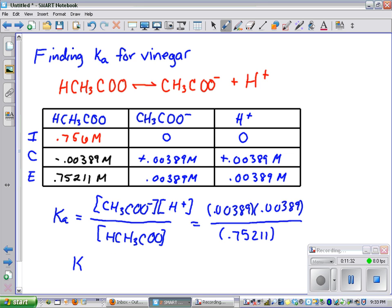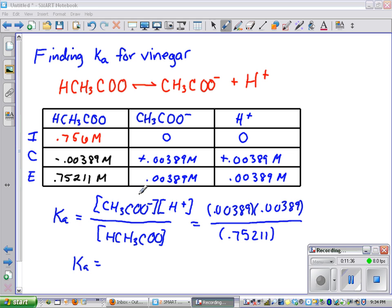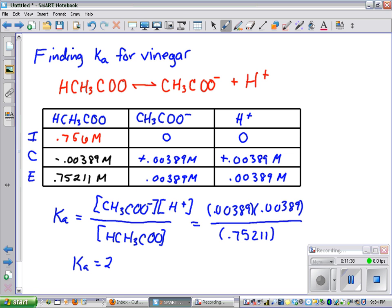And we get the Ka that is equal to, we get a final answer of 2.01 times 10 to the negative fifth. And that is very close to our accepted value of Ka for acetic acid.